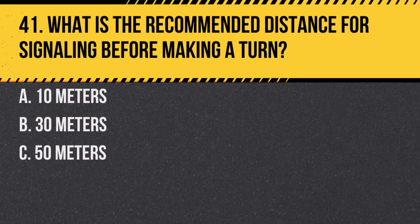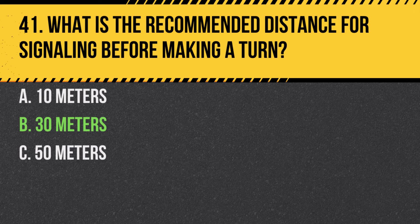Question 41. What is the recommended distance for signaling before making a turn? a. 10 meters. b. 30 meters. c. 50 meters. Answer: b. 30 meters. Signaling 30 meters before turning gives other drivers sufficient warning of your intentions.